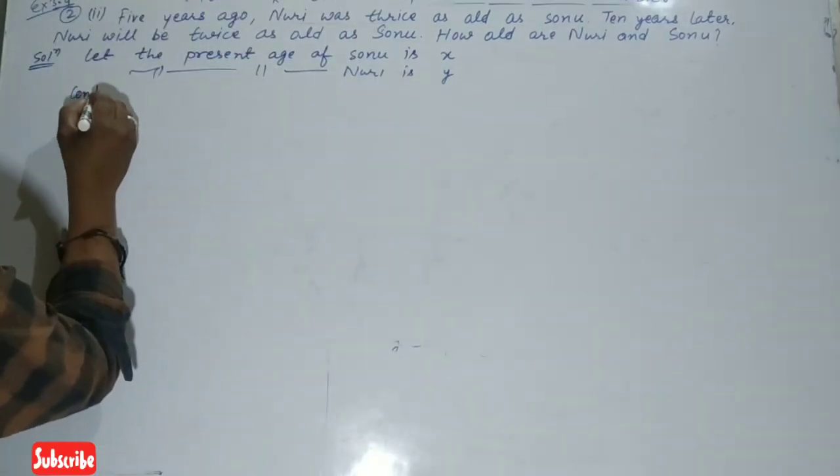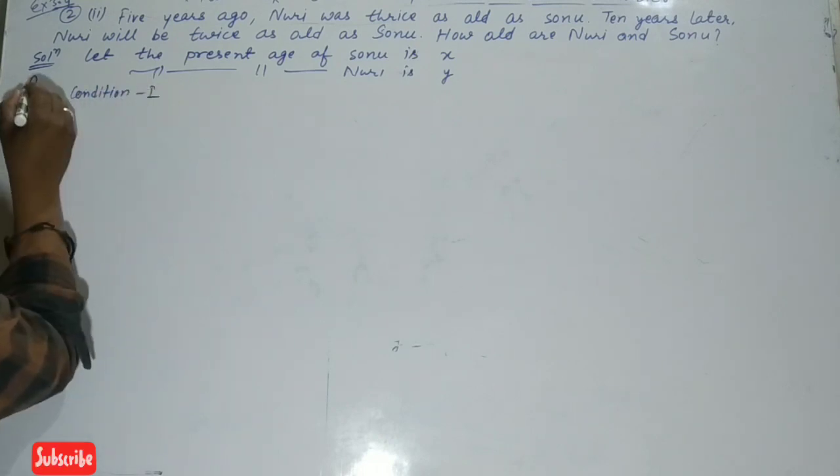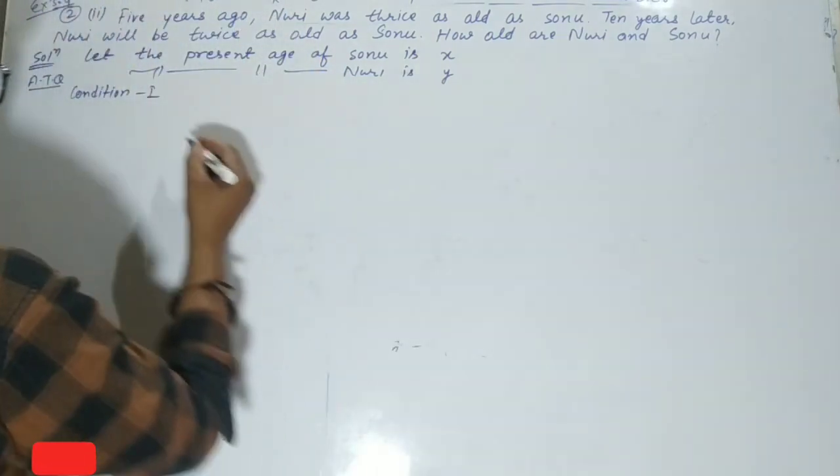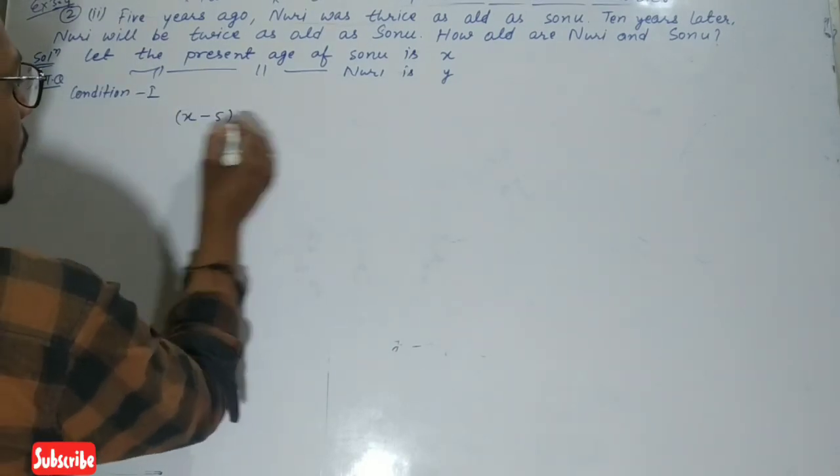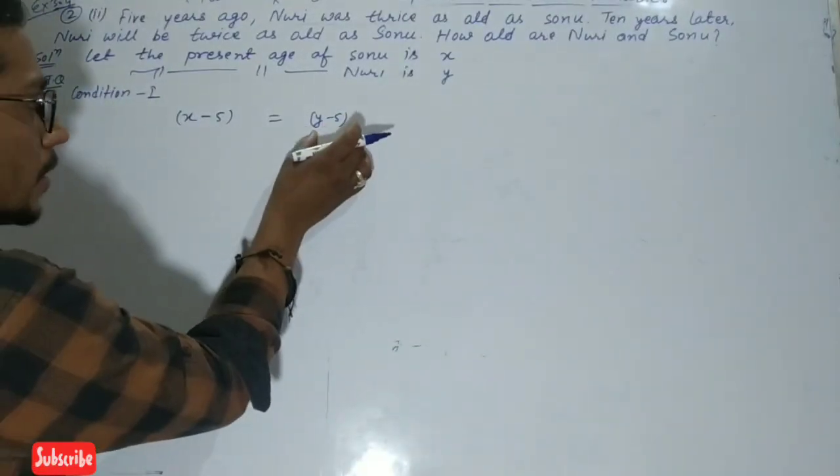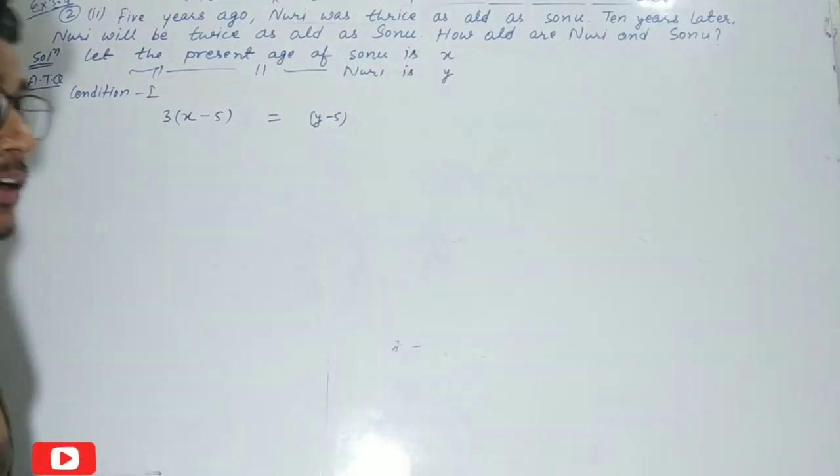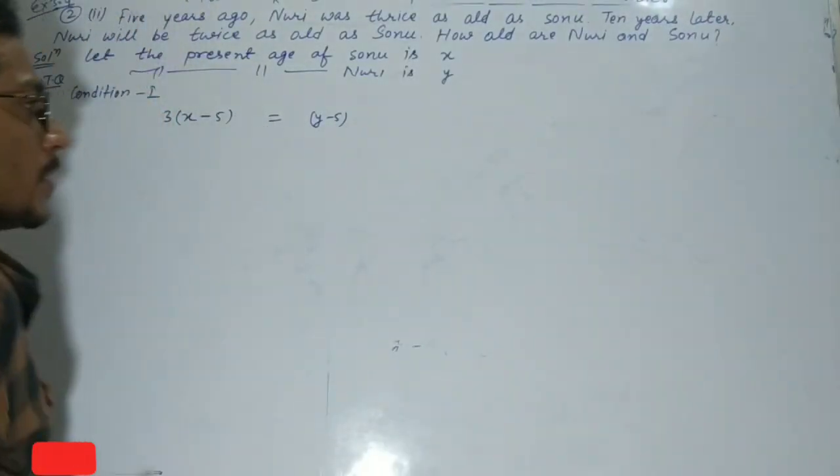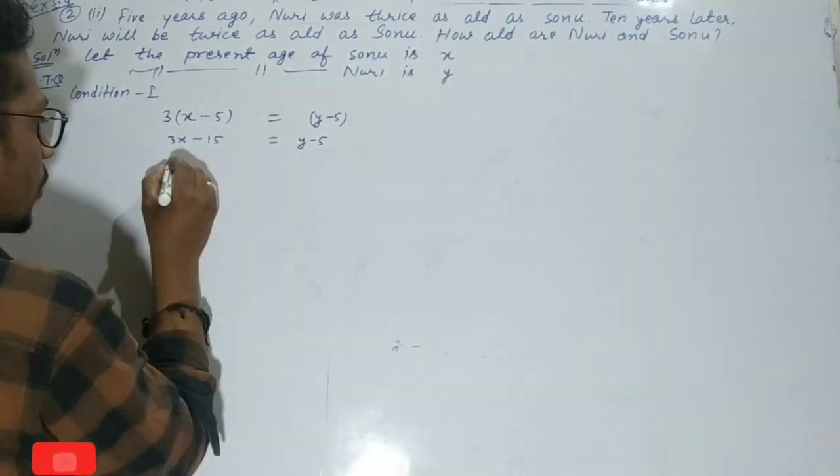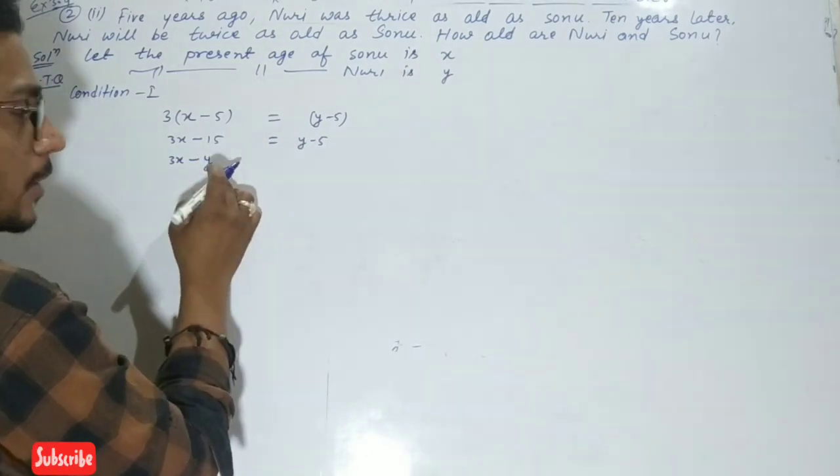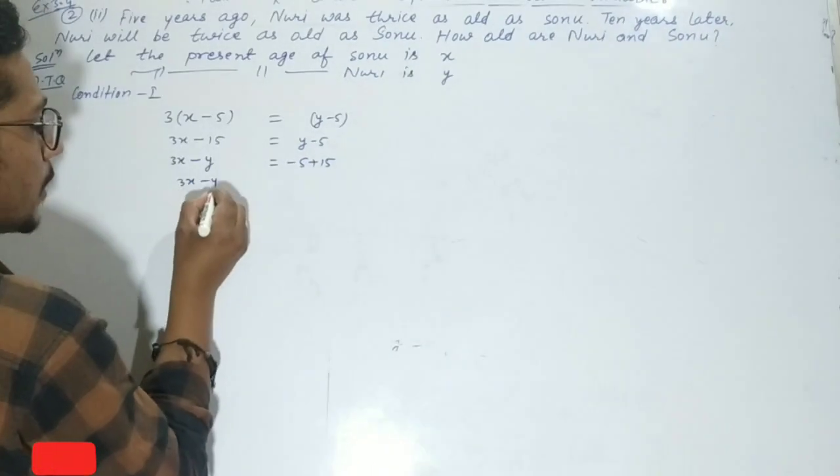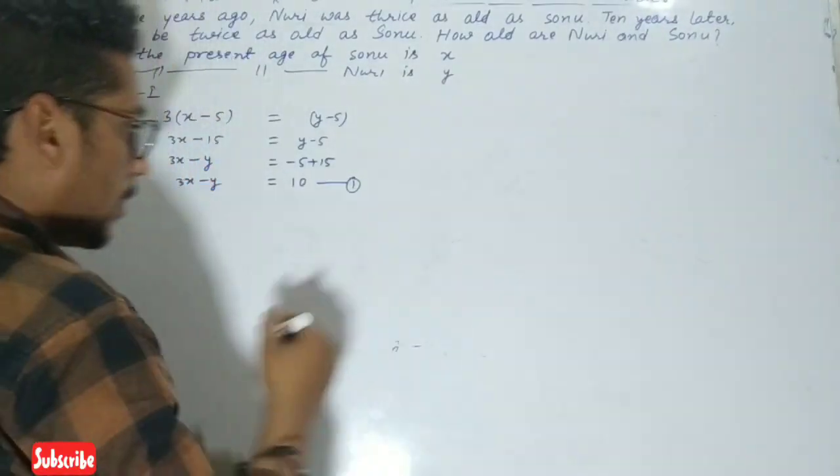Now according to question, condition one: 5 years ago, Sonu's age would be x-5 and Nuri's age would be y-5. But Nuri was thrice as old as Sonu, so y-5 = 3(x-5). This simplifies to 3x - y = 10. This is equation number 1.